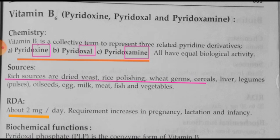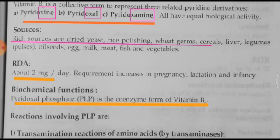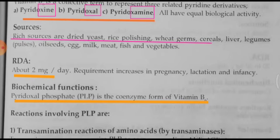Vitamin B6, pyridoxine, is available in various sources like dried yeast, rice polishing, wheat germ, cereals, liver, legumes, oil seeds, egg, milk, meat, fish and vegetables. The RDA of vitamin B6 is 2 mg per day, and the requirement increases in special conditions. The active coenzyme form of vitamin B6 is pyridoxal phosphate, also called PLP.